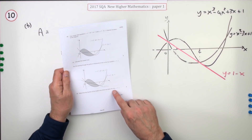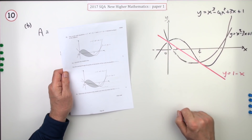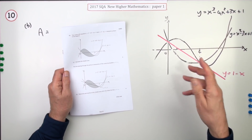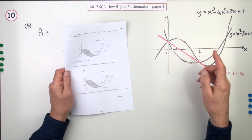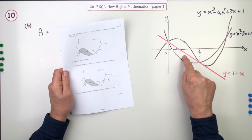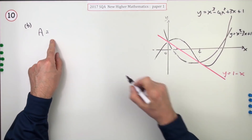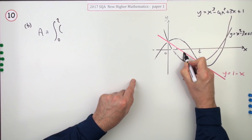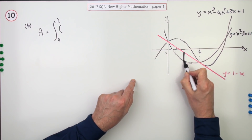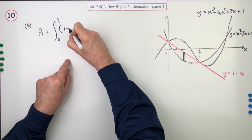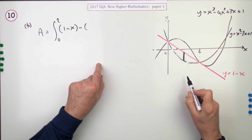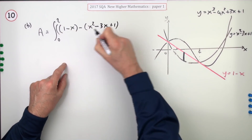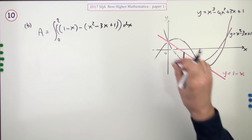In part B, determine the fraction of the shaded area which lies below the line y = 1 - x. You could work out the area above the line and take it away from 1, or find that area, subtract from the previous total, then find the fraction. But it's simpler to just do what it says: find the area that lies beneath the line. It still goes from 0 to 2. The little rectangles beneath the line give upper y minus lower y: the upper one is 1 - x, and the lower one is the parabola x² - 3x + 1. That expression multiplied by dx earns the mark.